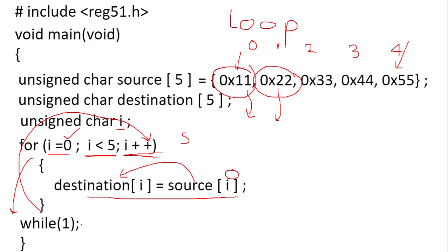The next statement is while(1). While(1) is a condition that is always true, meaning the program gets stuck here — it will keep executing this statement indefinitely. This acts as a stop statement; we are done with the programming, so we stop the program by writing while(1) followed by a semicolon. This completes the C program to copy 5 numbers from internal RAM locations of the 8051 microcontroller to another 5 internal RAM locations.